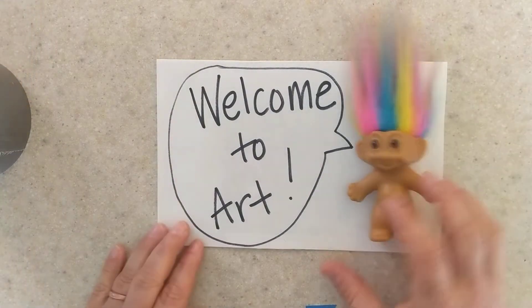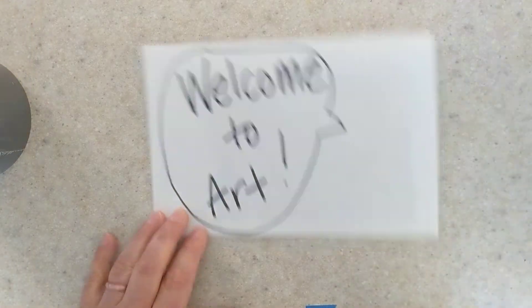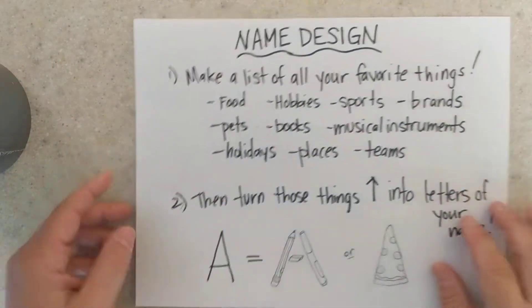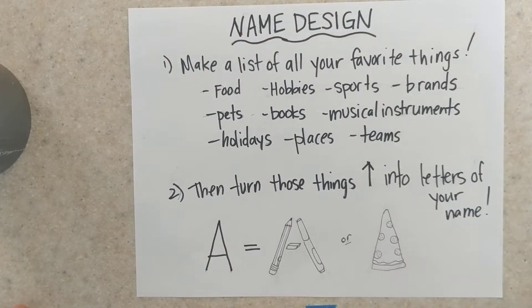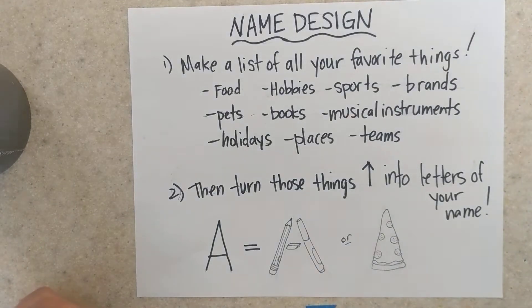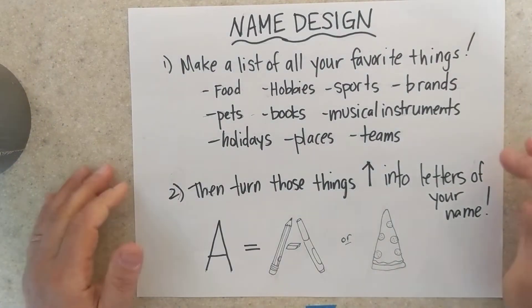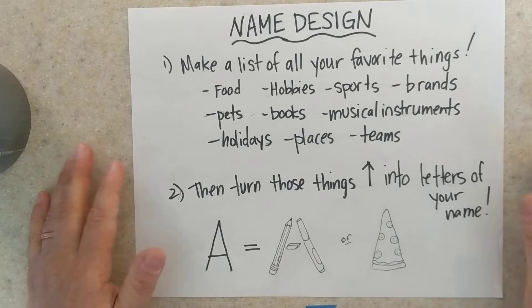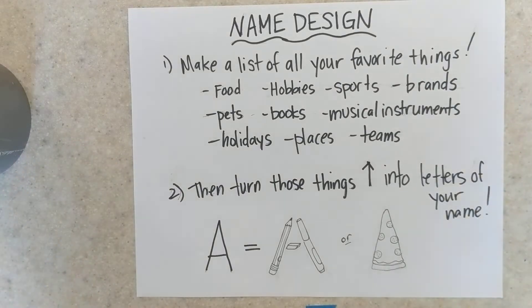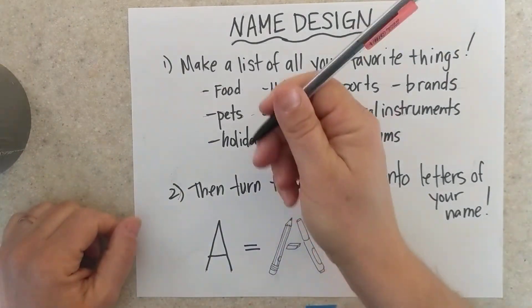This first activity is going to be something that we actually were going to do in class regardless, and that is a name design. To start, I'd like you to gather up some paper — you can use copy paper, lined paper, sketchbook paper, whatever paper you have accessible to you — and a pencil.